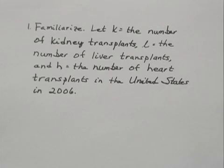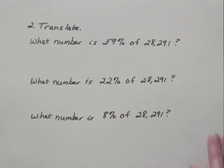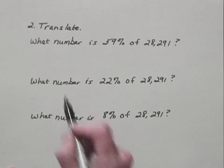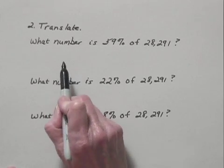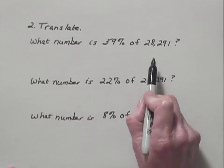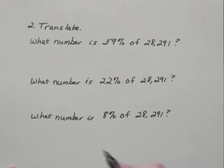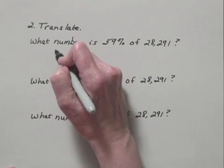Now we'll go to the second step, which is to translate the problem into some kind of mathematical language, and we'll translate to three equations. The first question that we are asked is, what number is 59% of 28,291? And this refers to the kidney transplants.